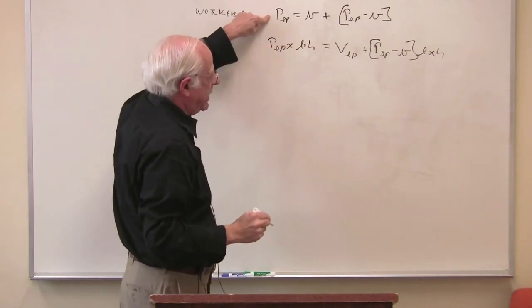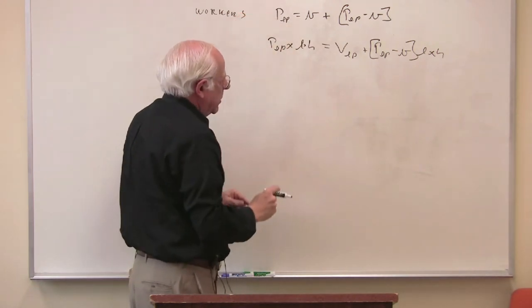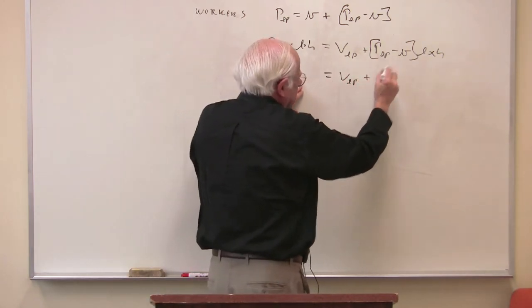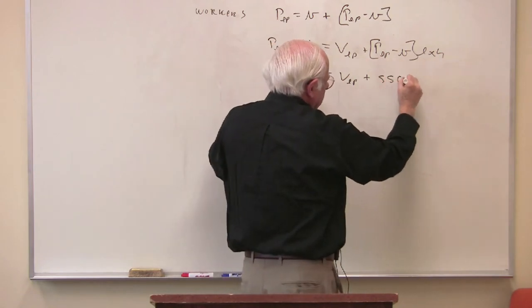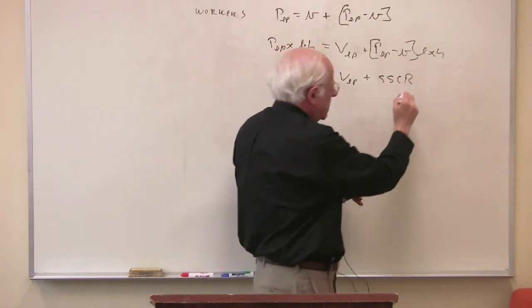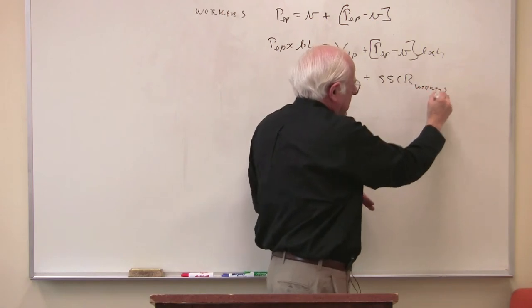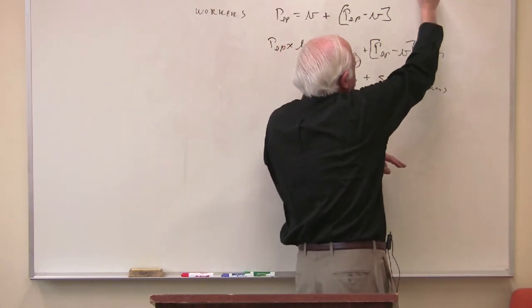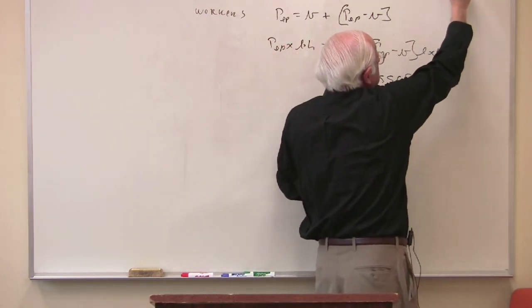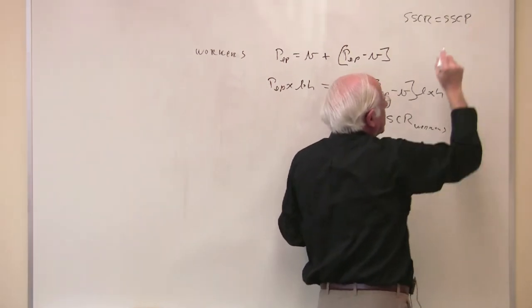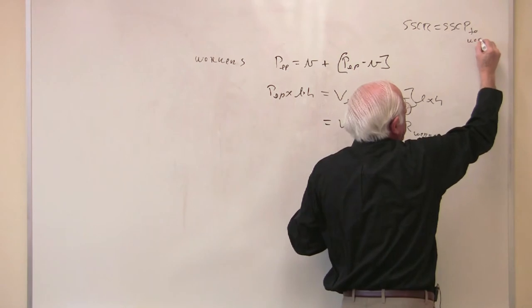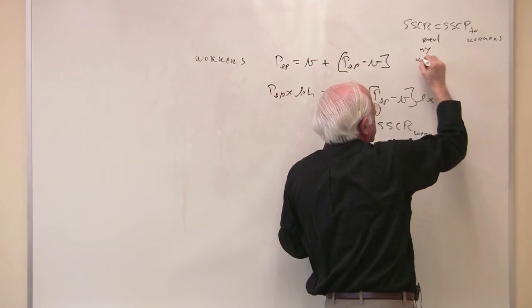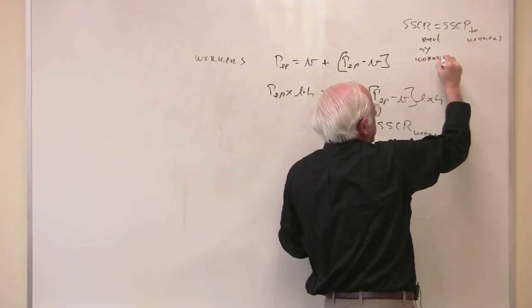Or altogether, the workers are getting a value of labor power plus this subsumed class revenue that goes to the workers. And that's the extra subsumed, that's equivalent to the subsumed class payment. That's the same as the subsumed class payment that the capitalists pay to workers. And this is received by workers.